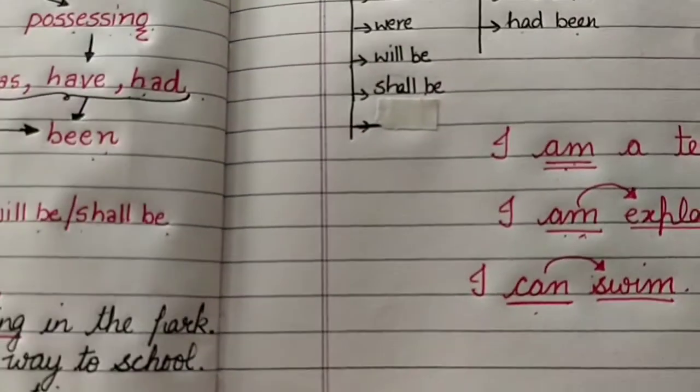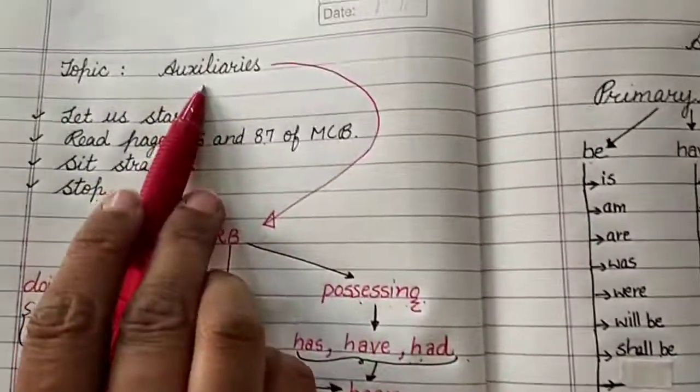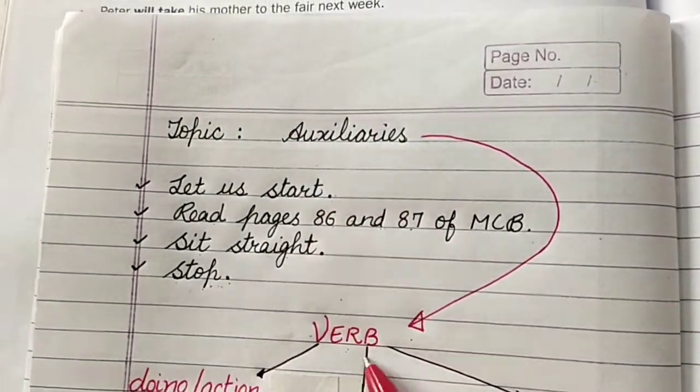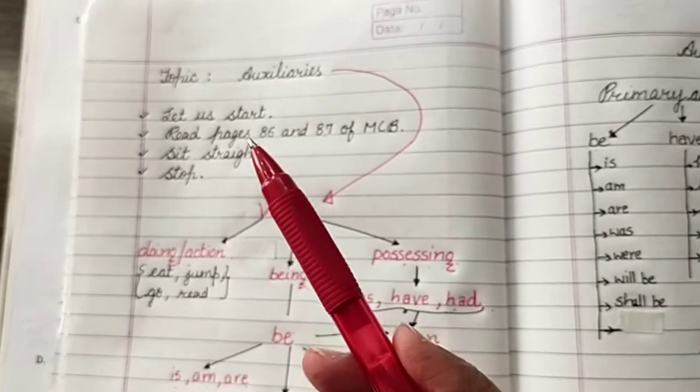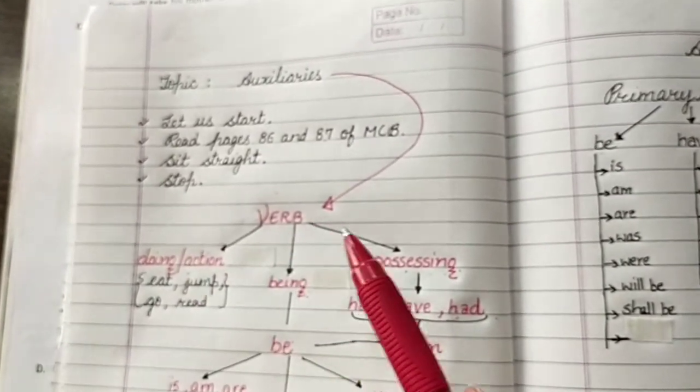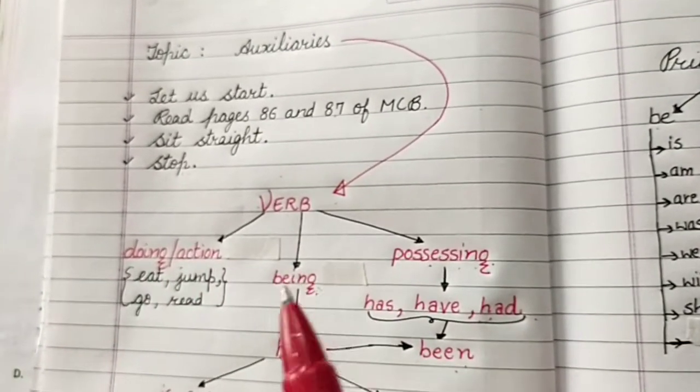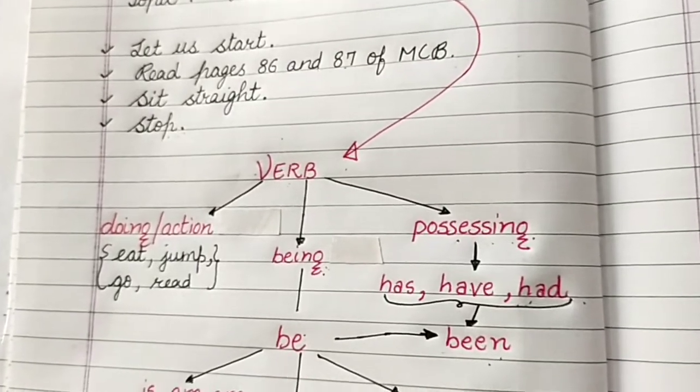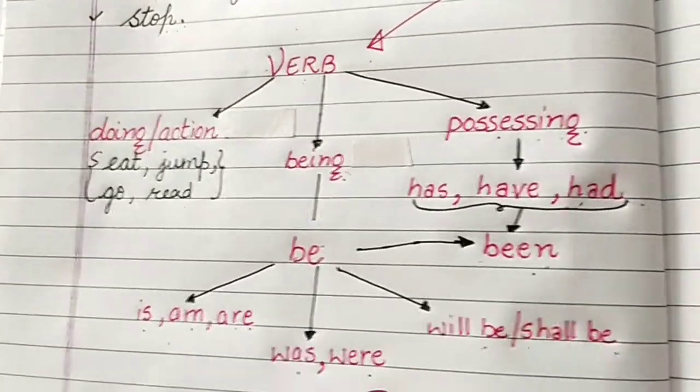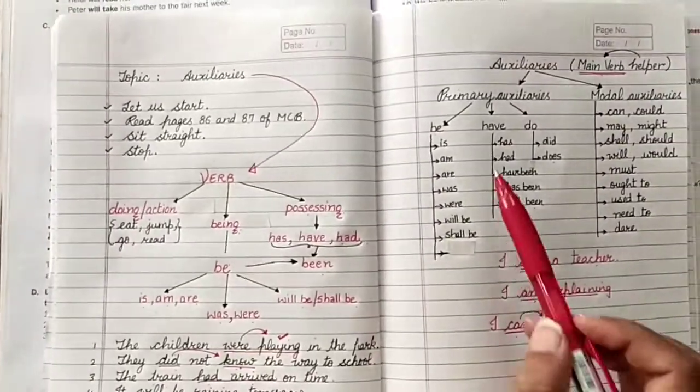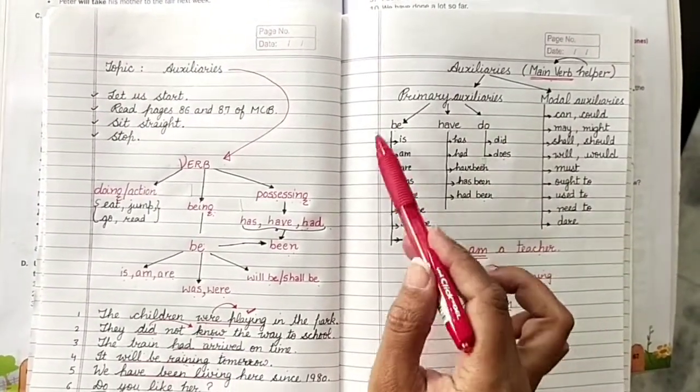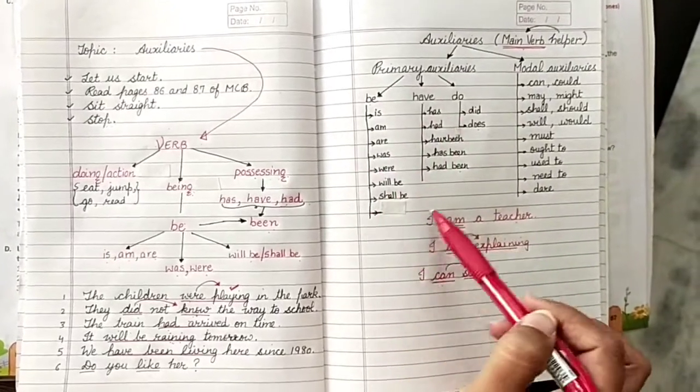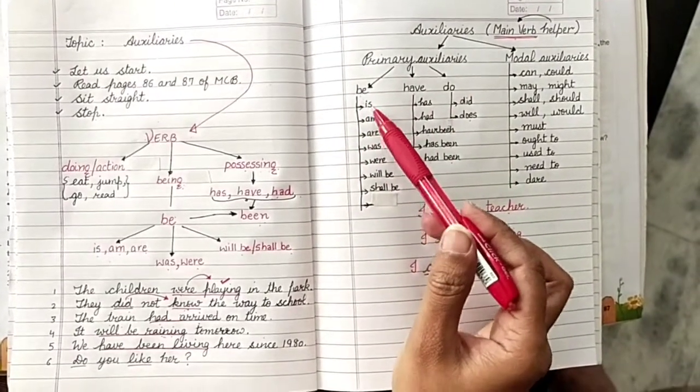So what are auxiliaries? Auxiliaries are only the verbs, the other name for the verbs. And actually they are the verb, main verb helpers. They help the main verb. They can be in two parts. The primary auxiliaries or modal auxiliaries. You have to remember these words. Put it into your memory.